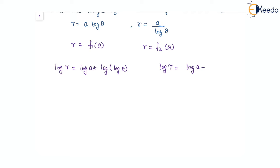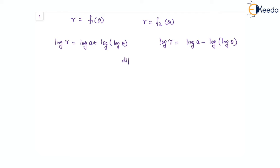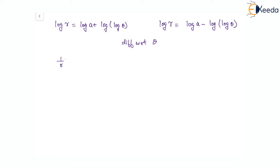Now we will be differentiating with respect to θ. We will have 1/r · dr/dθ equal to — log a is a constant, so 0 — plus 1 by log θ times 1 by θ, that is by the chain rule. And on the other side, 1/r · dr/dθ equal to 0 minus 1 by log θ times 1 by θ.